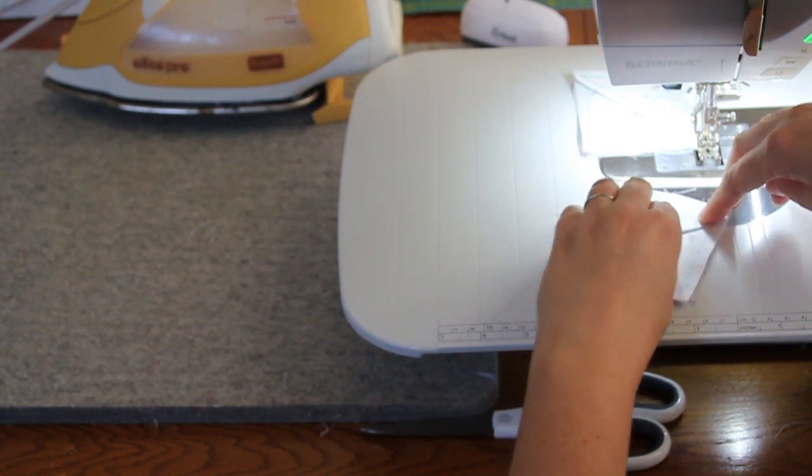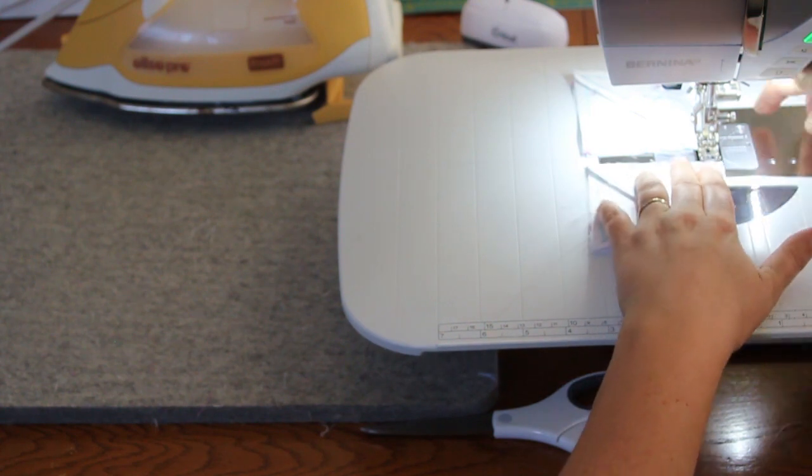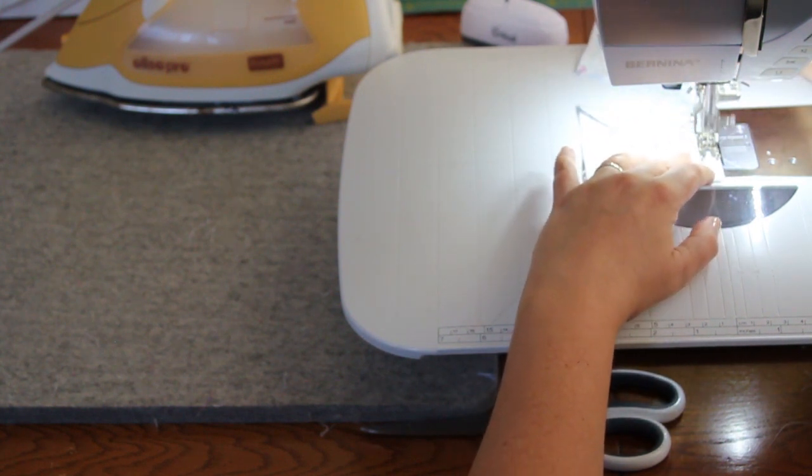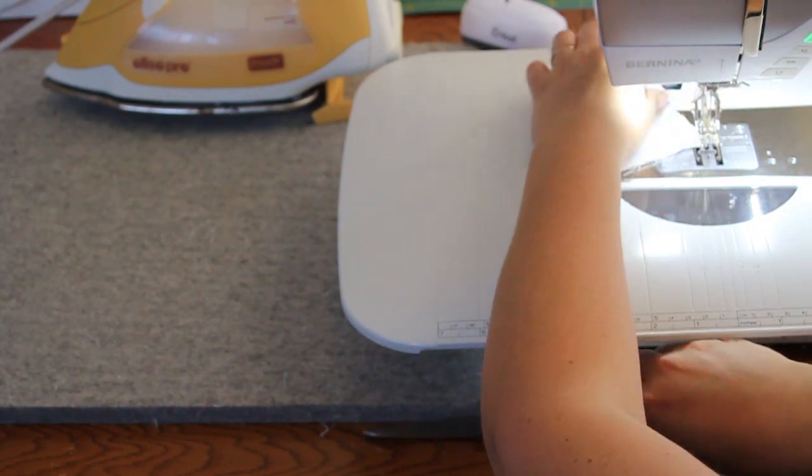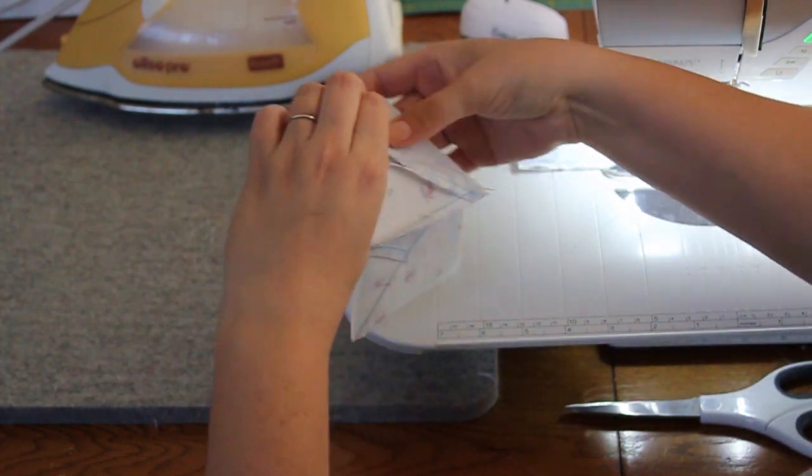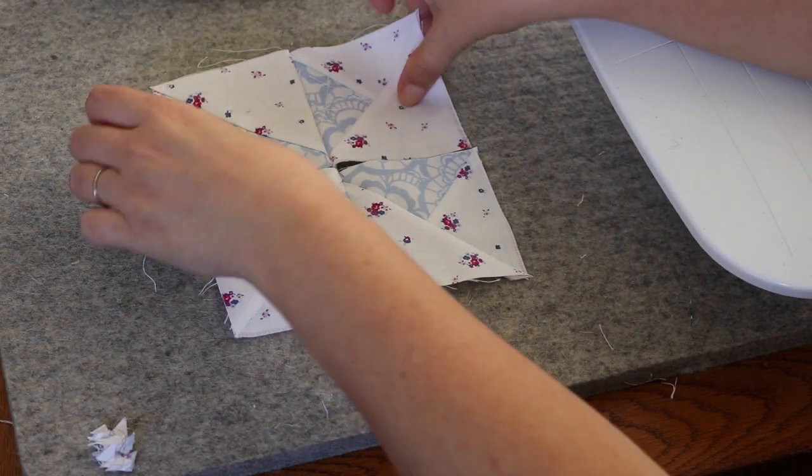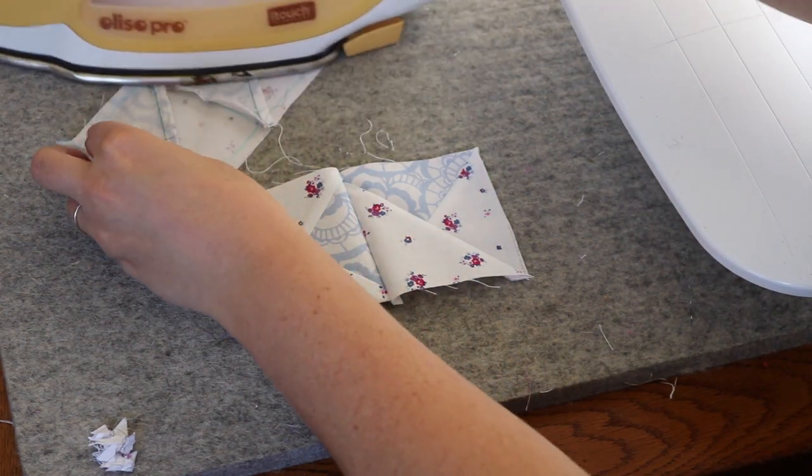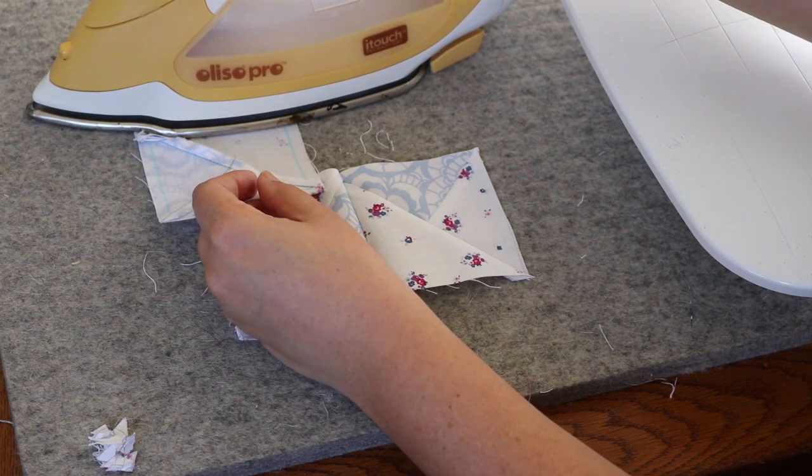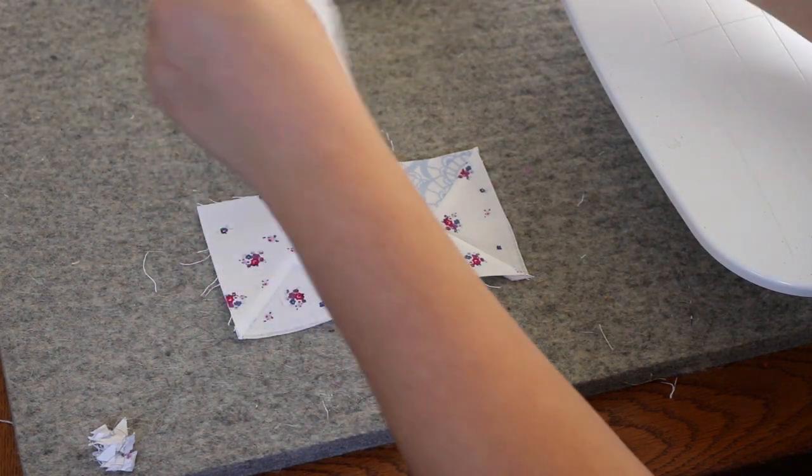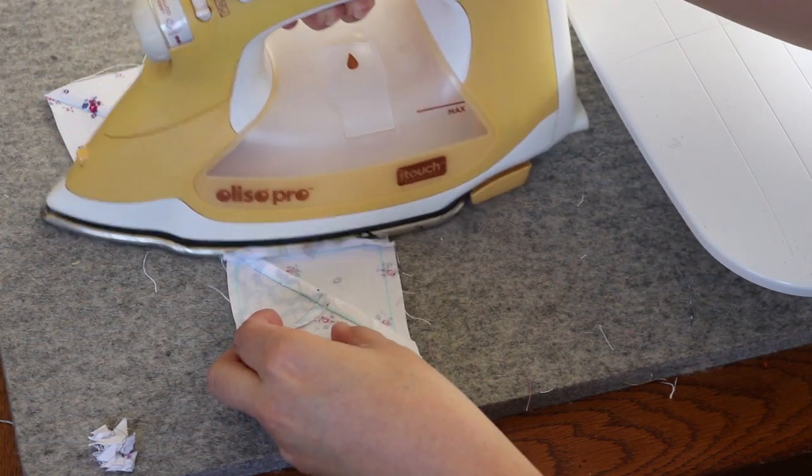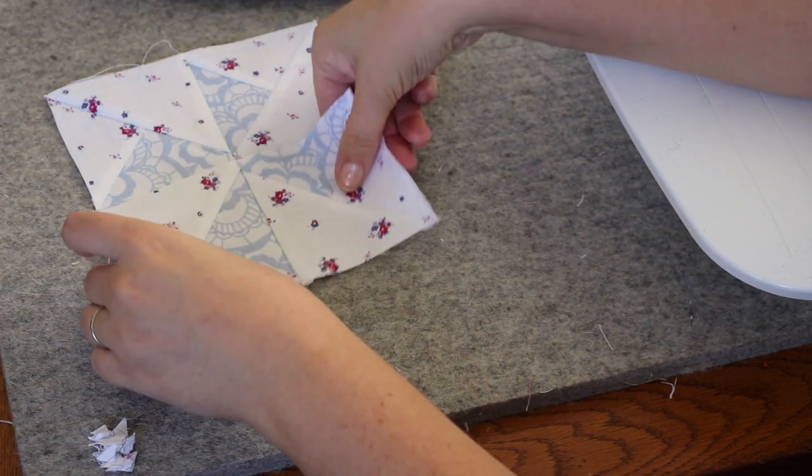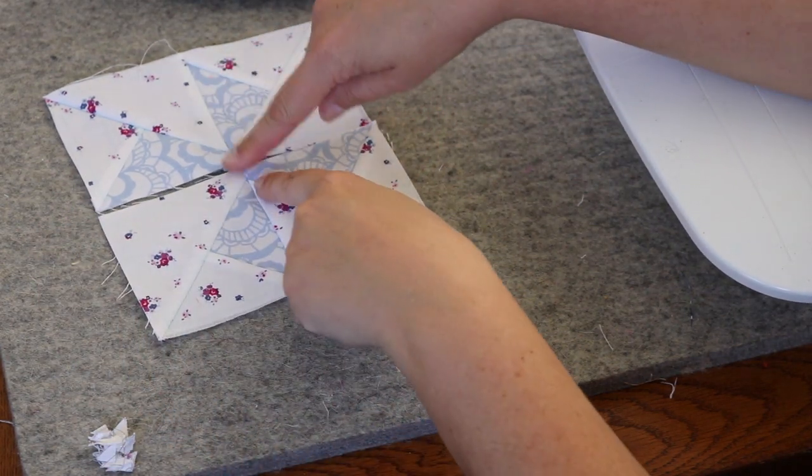Nesting the seams again here. I'm going to put my two halves together and I need to press the bottom here, the larger white piece. Because I press towards the larger white piece here and the larger white piece there, I'll be able to nest these seams as well.